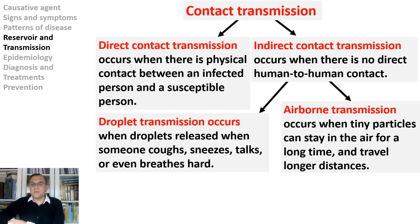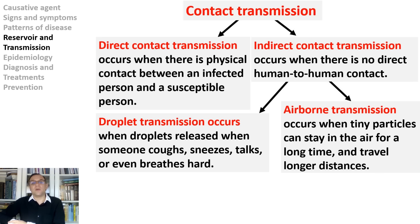Airborne transmission occurs when tiny particles can stay in the air for a long time and travel longer distances. Airborne diseases commonly include flu, measles, and tuberculosis. Some particles, such as the fungus Aspergillus, are widely present in the environment — in soil, plants including decomposing plant matter, household dust, building materials, as well as food and water. During building renovations, breathing in dust containing the fungus may cause disease. Thus, Aspergillus causes airborne disease. Similarly, anthrax bacteria are present in the soil in many places around the world — a person can become sick by breathing in anthrax spores.